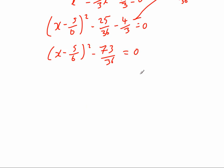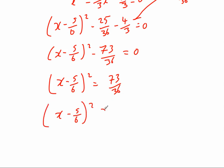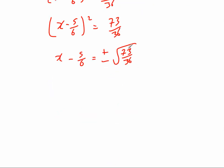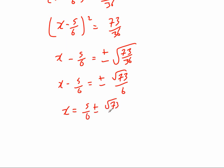Similar approach: bring this over and square root and bring that over. So we get x minus 5 over 6 squared equals 73 over 36. Square rooting both sides gives x minus 5 over 6 equals plus or minus the square root of 73 over 36. Remembering the denominator can be square rooted separately, that gives us plus or minus the square root of 73 over 6. Adding 5 sixths to both sides gives x equals 5 sixths plus or minus root 73 over 6. Splitting this up: x equals 5 plus root 73 over 6, or x equals 5 minus root 73 over 6.